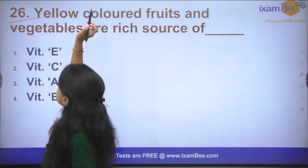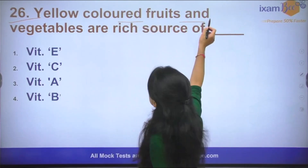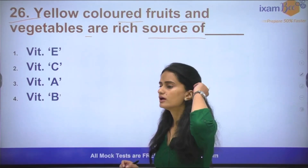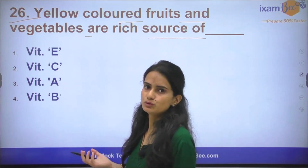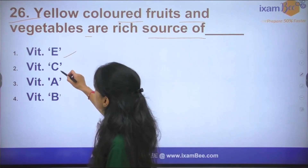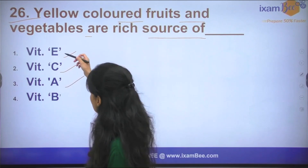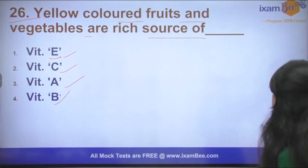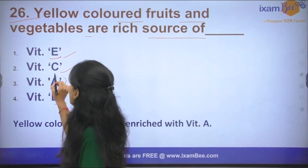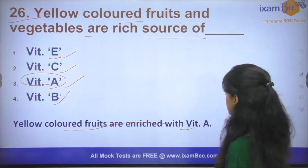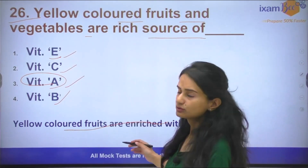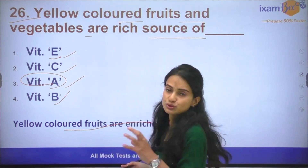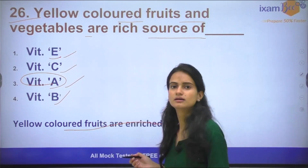Question number 26: Yellow colored fruits and vegetables are a rich source of which vitamin? Is it Vitamin A, Vitamin C, or Vitamin E? The answer is Vitamin A. Yellow colored fruits contain Vitamin A in large amounts. Major examples are papaya and mango, which are yellow colored fruits rich in Vitamin A.